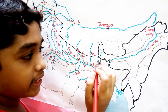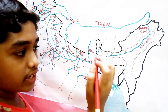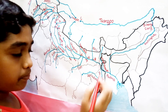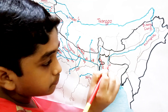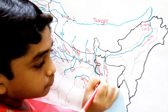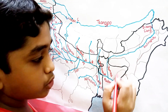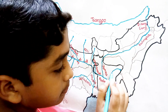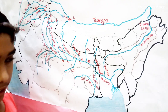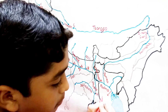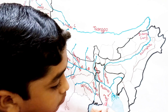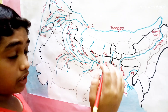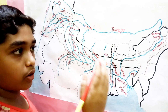When it enters Bangladesh, it is called Jamuna. And later, when it joins with the Meghna river, it is called Meghna. The Brahmaputra is also called the Red River of India.